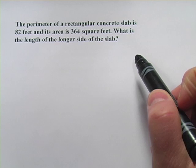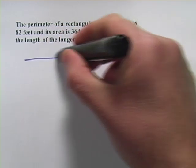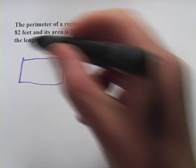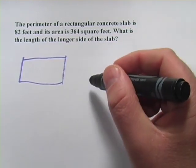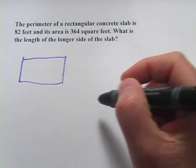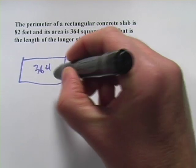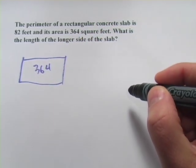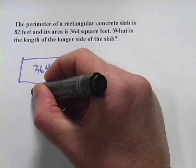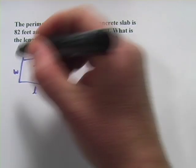It says the perimeter of a rectangular concrete slab is 82 feet. So the distance around this is 82 feet and its area is 364 square feet. What is the length of the longer side of the slab? So let's go ahead and name these. We'll call them L and W, length and width.